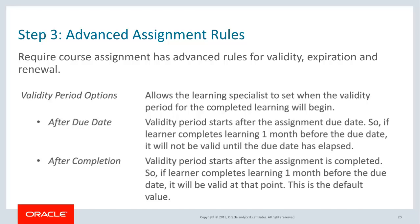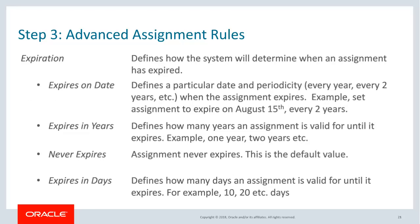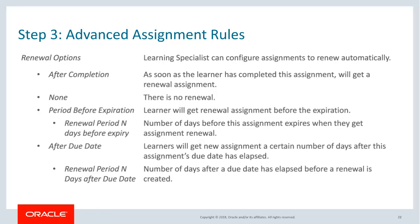Required course assignments have advanced rules for validity, expiration, and renewal. Validity period options allow the learning specialist to set when the validity period for completed learning will begin — immediately, after the due date, or soon after completion. Expiration settings define when an assignment has expired: it can be set to never expire, expire on a particular date, every two or three years, or expire in a specified number of years or days. Renewal options configure assignments to renew automatically — if set to none, it will not auto-renew; otherwise, renewal can happen immediately after completion, n days after the due date has passed, or n days before expiration.